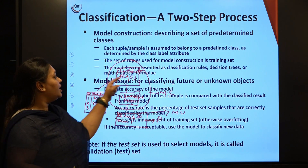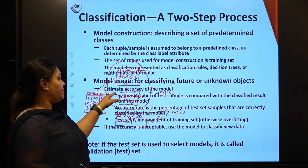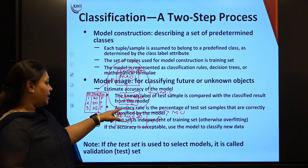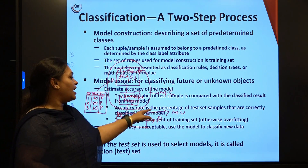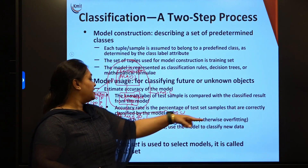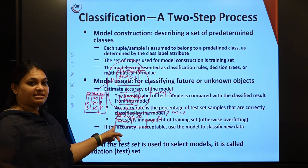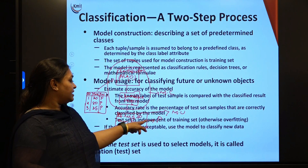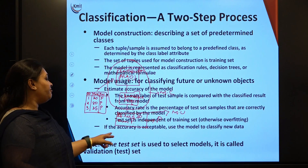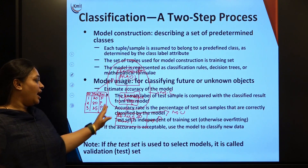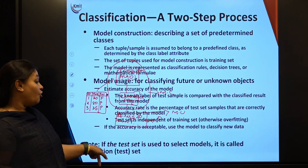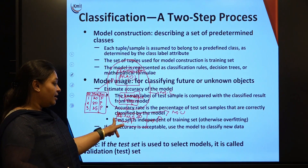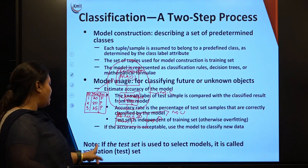In model usage, the model is used for classifying future or unknown objects and to estimate the accuracy of the model. The known label of a test sample is compared with the classified result from the model. Accuracy rate is the percentage of test set samples correctly classified by the model. The test set is independent of the training set. If accuracy is acceptable, the model is used to classify new data. If the test set is used to select models, it is called a validation set.